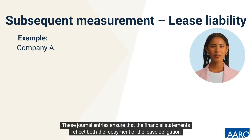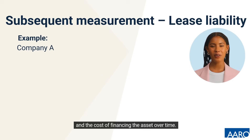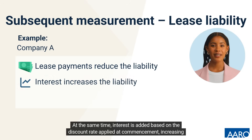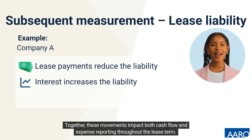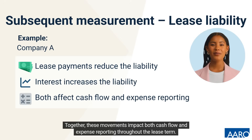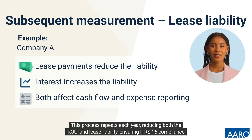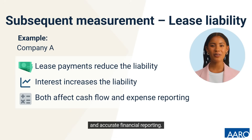These journal entries ensure that the financial statements reflect both the repayment of the lease obligation and the cost of financing the asset over time. As lease payments are made, the lease liability is gradually reduced. At the same time, interest is added based on the discount rate applied at commencement, increasing the liability. Together, these movements impact both cash flow and expense reporting throughout the lease term. This process repeats each year, reducing both the right-of-use asset and lease liability, ensuring IFRS 16 compliance and accurate financial reporting.